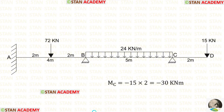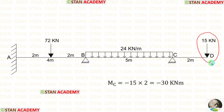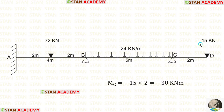In this analysis, we can easily calculate MC because on the right of C there is overhanging. To calculate MC, we have to find the moment at point C from point D. At point D there is a point load of 15 kN, and the overhanging distance is 2 meters. When we multiply the load 15 kN by the distance 2 meters, we get MC, which is equal to minus 30 kN·m.